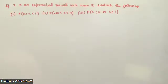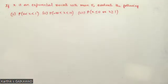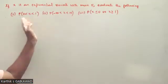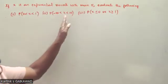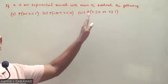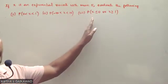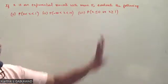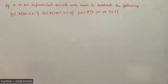Next question. If x is an exponential variate with mean phi, evaluate the following: first, P(x) between 0 to 1; second, P(x) between minus infinity to 10; and third, P(x less than or equal to 0 or x greater than or equal to 1).